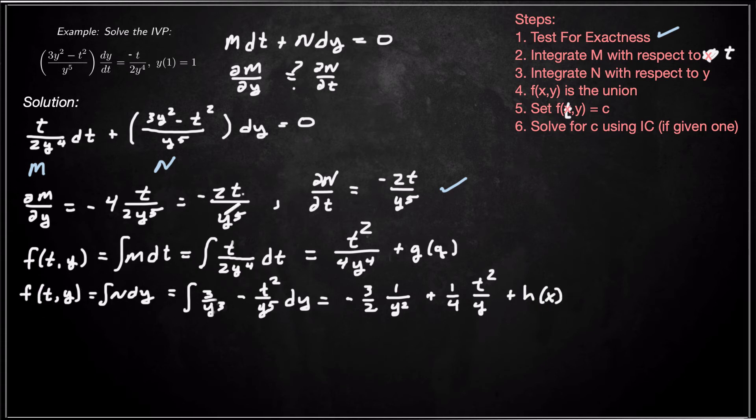So then we take the union to f(t,y). That should be t right there. f(t,y) is going to be the union of these two. f(t,y) is going to be, well, the common thing is 1/4 t²/y⁴. So that's the common thing. But now my function that only depends on y is -3/(2y²) equals a constant.